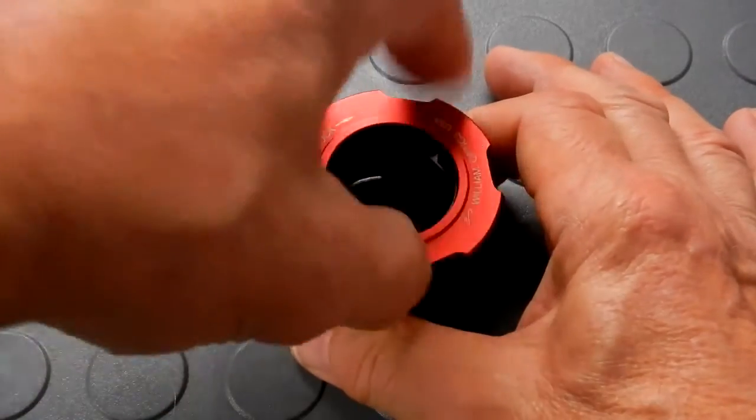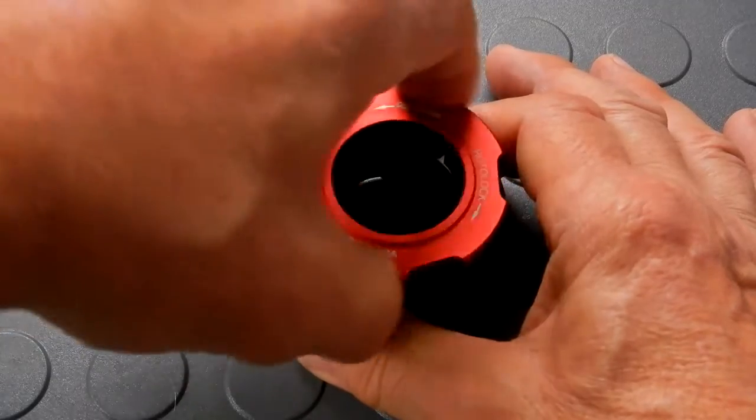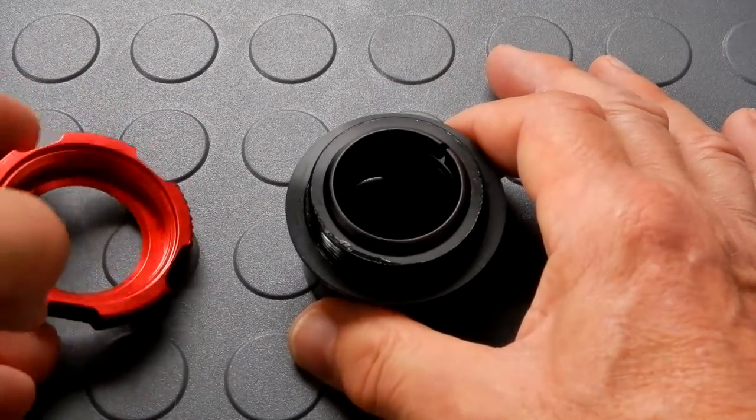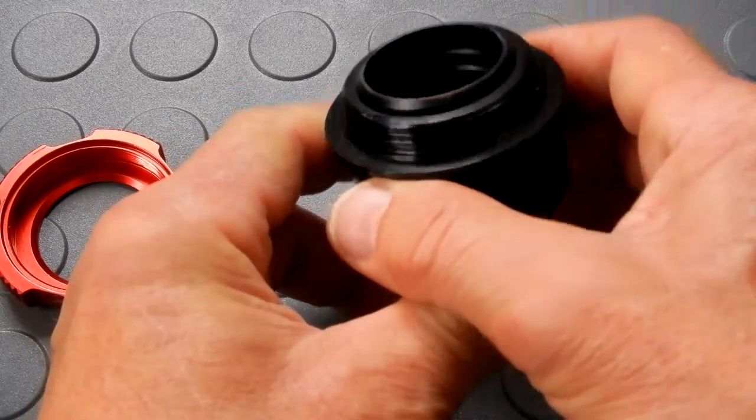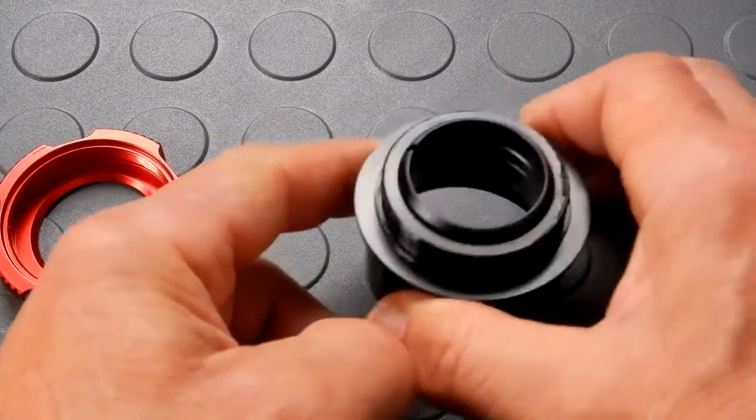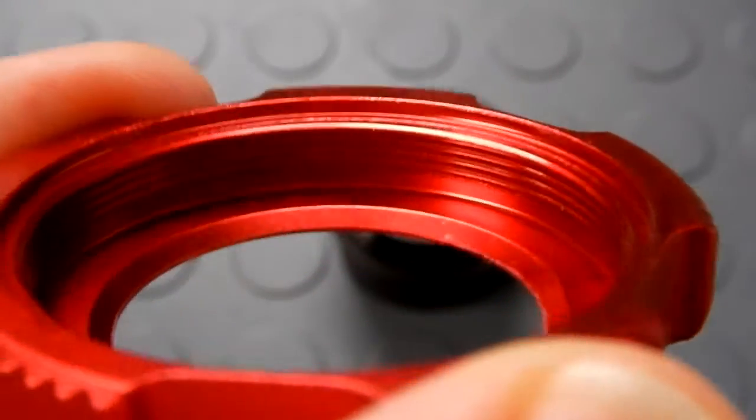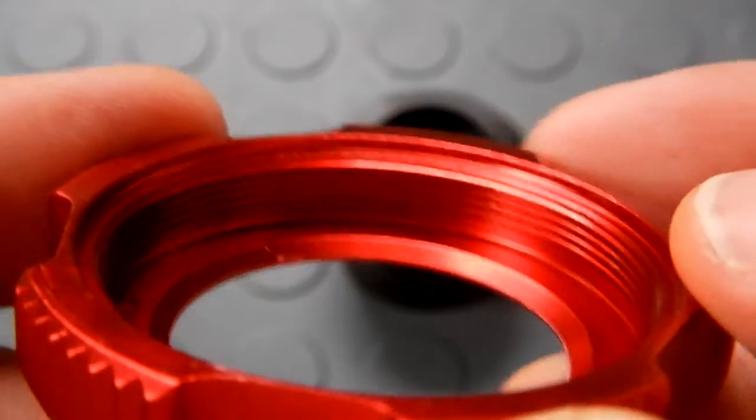Let's see how this thing is constructed. I'm going to take the locking knob off. As you can see, there is some grease on those threaded portions. Close-up of the threads on the retaining ring, the locking ring.